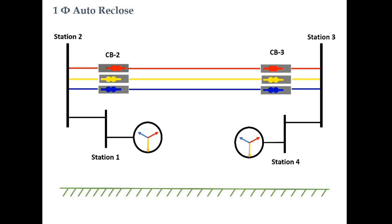There are basically two kinds of auto reclosure schemes used in EHV transmission lines: three-phase auto reclosure and single-phase auto reclosure. Transmission lines latched with circuit breakers having different mechanisms for their different phases can use single-phase auto reclosure, while circuit breakers with a single mechanism for all three phases use three-phase auto reclosure schemes. Let us start with single-phase auto reclosure.